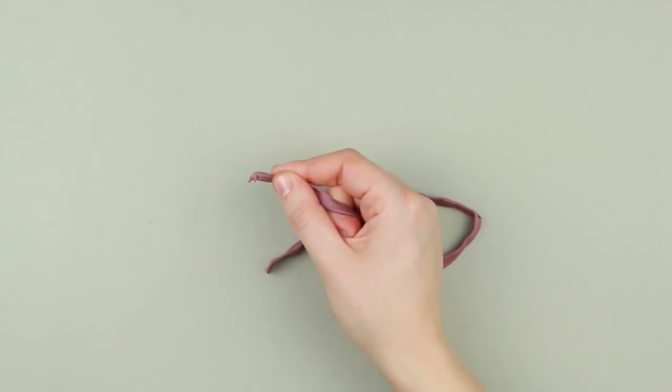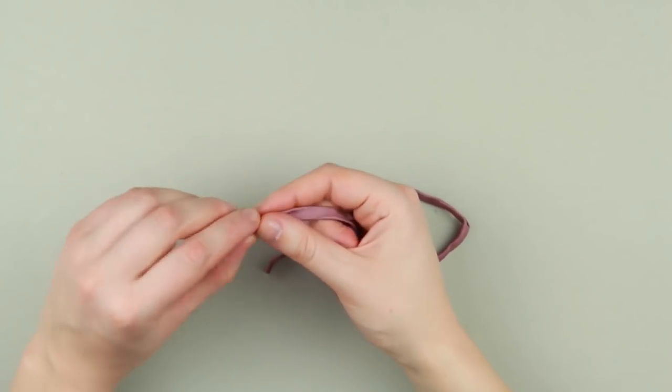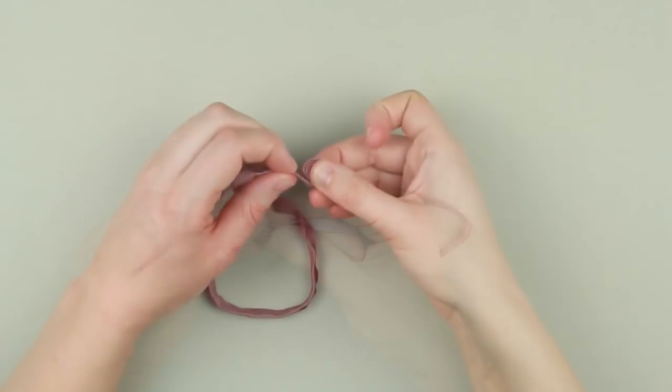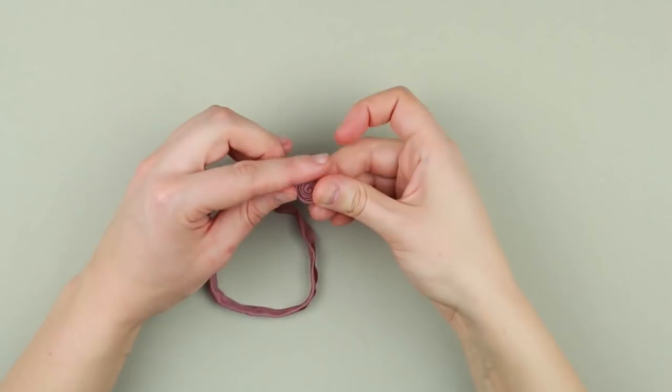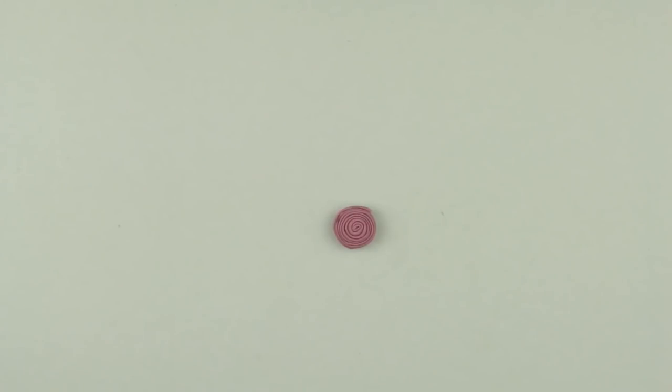Hot glue the end. Roll the strip, adding the glue from time to time. We've got a small fabric roll.